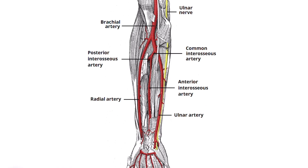Here you can see in this image that this is the brachial artery. It divides at the level of the radial tuberosity, or just at the level of the neck of radius, or just above the radial tuberosity, where it divides into its two branches — one is the ulnar artery and the other is the radial artery.